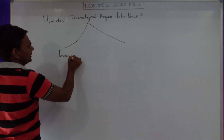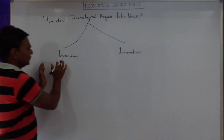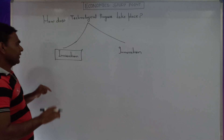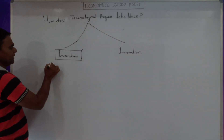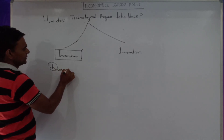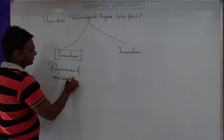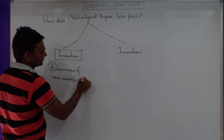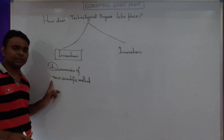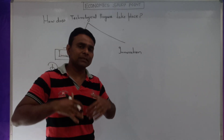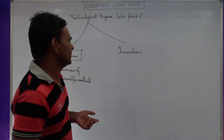Invention and innovation are two key concepts. Invention means the discovery of new scientific methods. Innovation takes place when these new scientific ideas are commercially used for actual production of commodities.